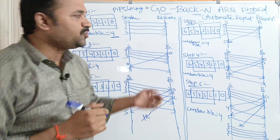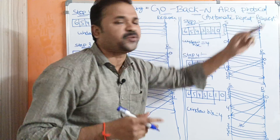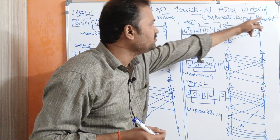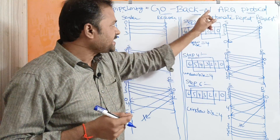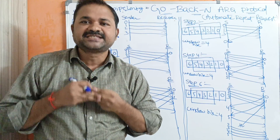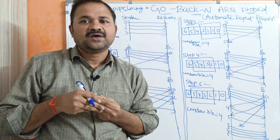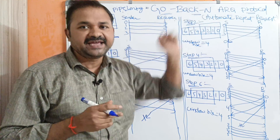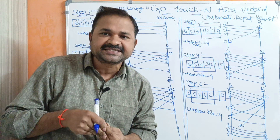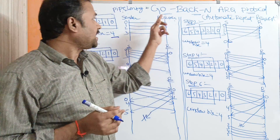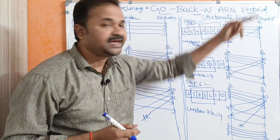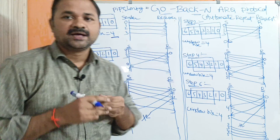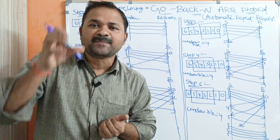Let us discuss the Go-Back-N ARQ protocol. ARQ stands for Automatic Repeat Request. Here, N specifies that the sender window size is N, whereas the receiver window size is 1. The sender can send N frames at a time. Go-Back-N ARQ uses a concept called pipelining, which means sending multiple frames from sender to receiver without waiting for acknowledgement for previously sent frames.